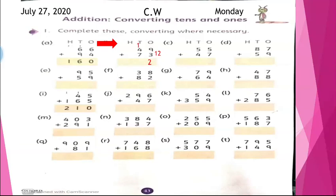11 plus 1 is 12. So we will write here 12. So the answer is 122. Now we will do part C.